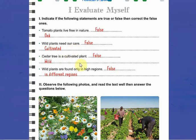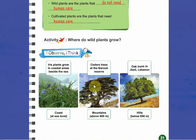Cedar tree is a cultivated plant — it's also false since cedar tree is not a cultivated plant, it's a wild plant. And wild plants are found only in high regions is also false, since as we said in the lesson, wild plants can be found at different altitudes like coast, mountains, and hills.